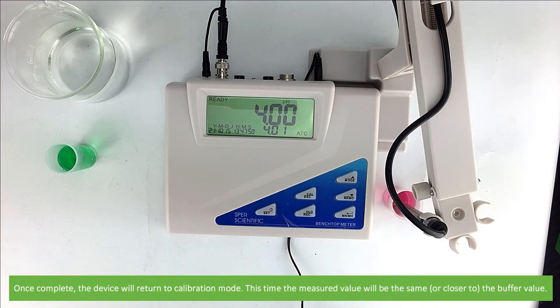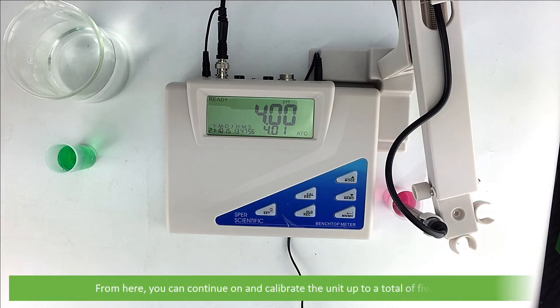This time, the measured value will be the same as the buffer value. From here, you can continue on and calibrate the unit up to a total of 5 points.